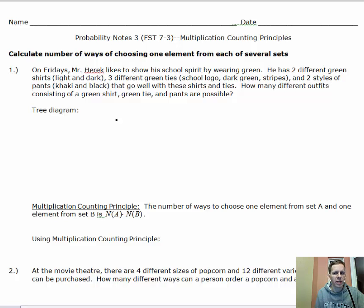This is Probability Notes 3, Multiplication Counting Principles. Today we're going to calculate the number of ways of choosing one element from each of several sets. We're also looking at counting arrangements with and without replacement.